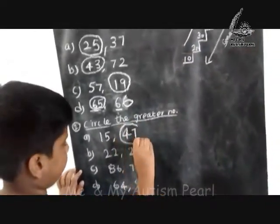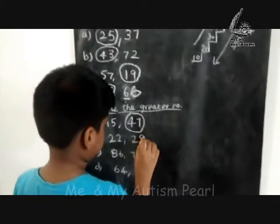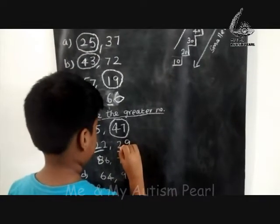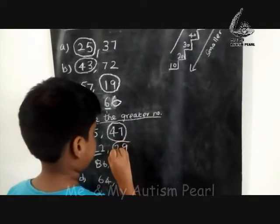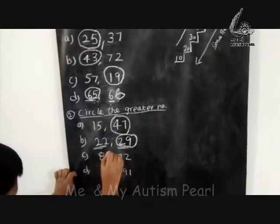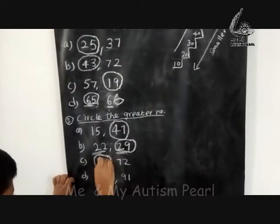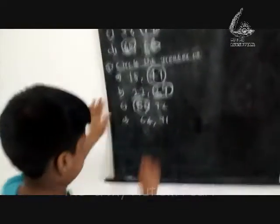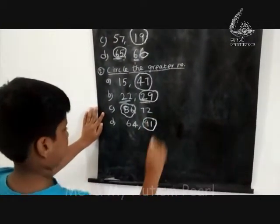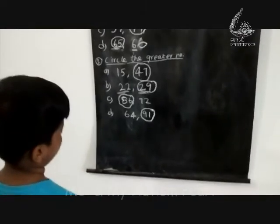Ok, come on, make it faster. 47 — because it has 4 tens. Both are the same so we compare the ones. 29 — the greatest number because 29 has 9 ones. 86 — because 86 has 8 tens. Thank you.